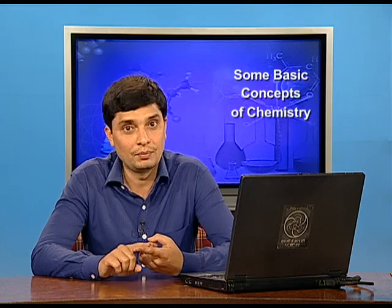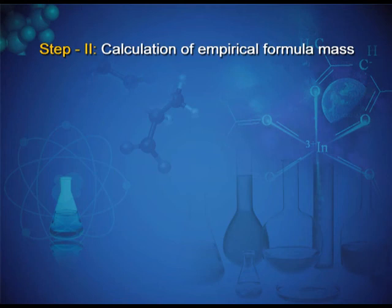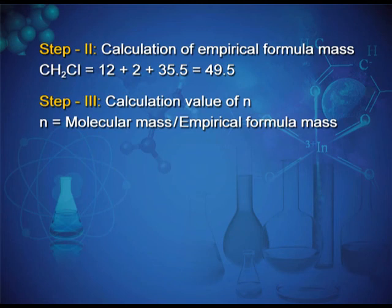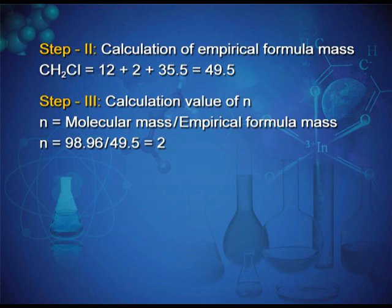Step 2 — calculate empirical formula mass of CH₂Cl: carbon (12) + hydrogen (2 × 1 = 2) + chlorine (35.5) = 49.5. Step 3 — calculate N: N = molecular mass ÷ empirical formula mass = 98.96 ÷ 49.5 = 2.